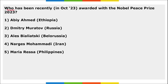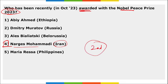Nargis Mohammadi was awarded the Nobel Peace Prize 2023 for her contribution to the fight to promote human rights and freedom, specifically for women in Iran. She became the second Iranian woman to receive the Nobel Peace Prize. Currently, she is serving a 10-year jail sentence in Tehran.